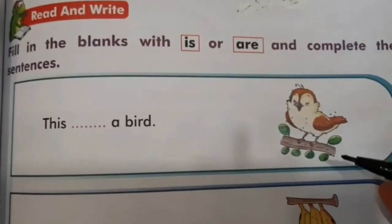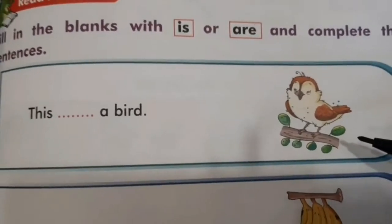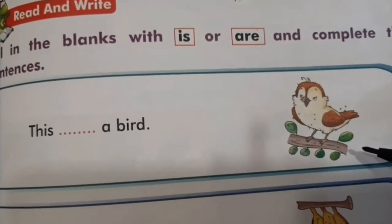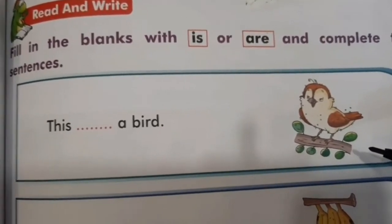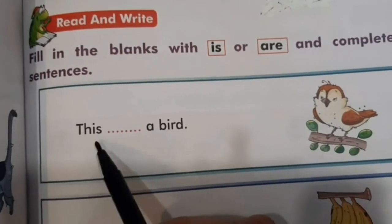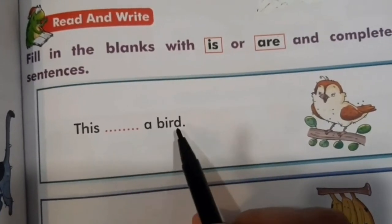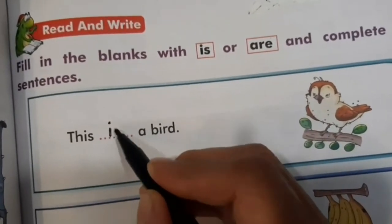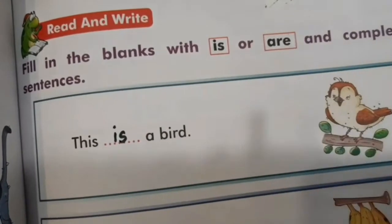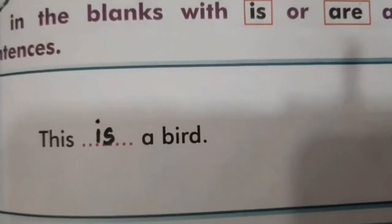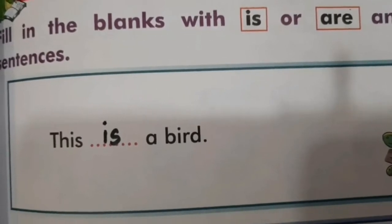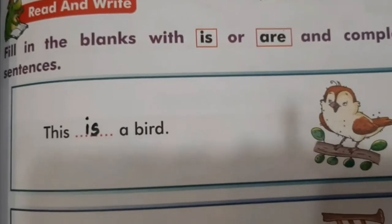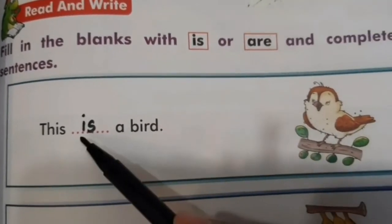Yehaan peh kitne birds hain? Yehaan peh one bird hai. How many birds are there? There is only one bird. So, sentence hai: 'This ___ a bird.' Toh hum yehaan peh kya likhenge? 'Is'. This is a bird. Is liye 'is' likhenge kyunki yehaan peh only one bird hai.